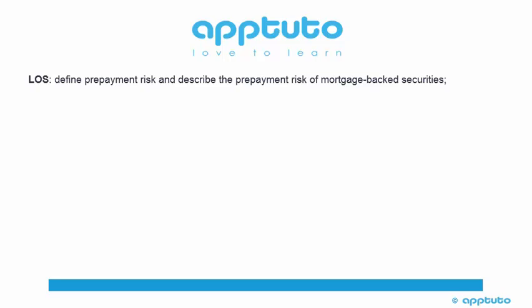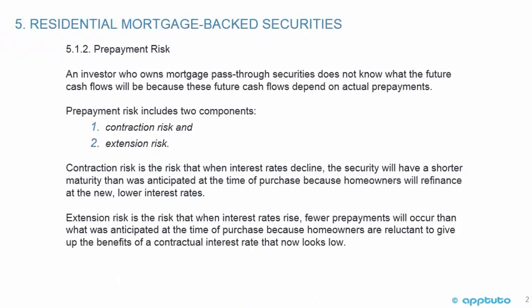This LOS defines prepayment risk and describes the prepayment risk of mortgage-backed securities. An investor who owns mortgage pass-through securities does not know what the future cash flows will be because these future cash flows depend on actual prepayments.